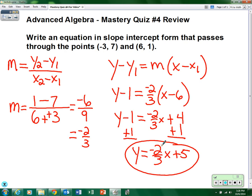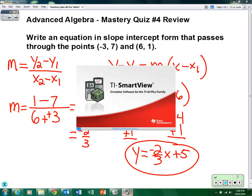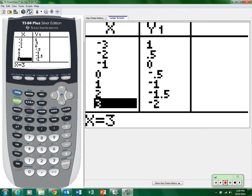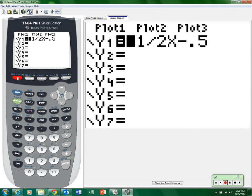The slope-intercept form that passes through the points (-3, 7) and (6, 1). Now one thing that I would suggest is checking it on the calculator. So pull up your calculator, go to your y equals screen.